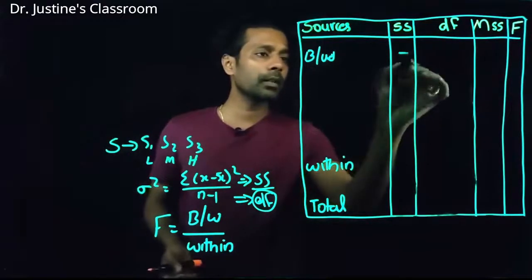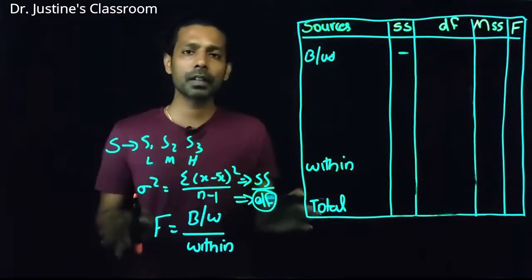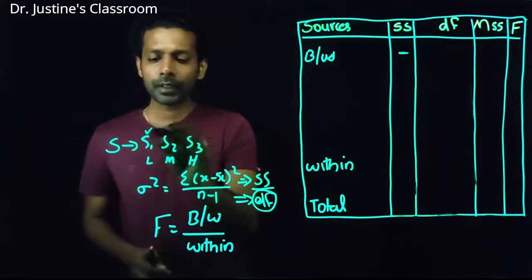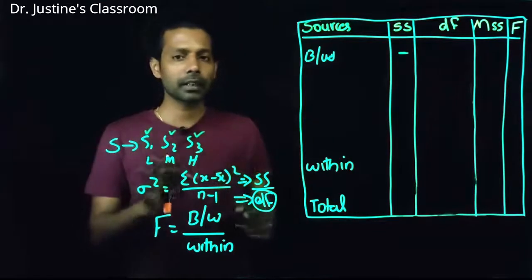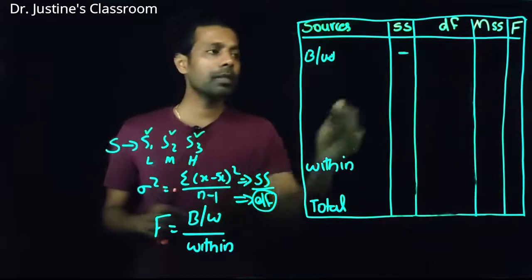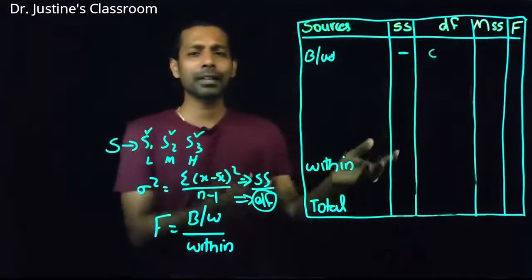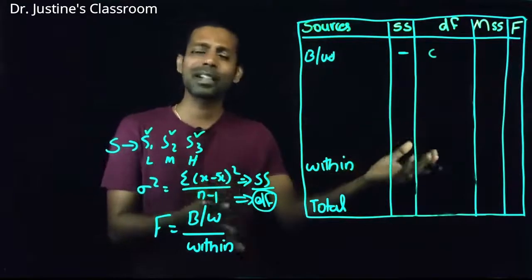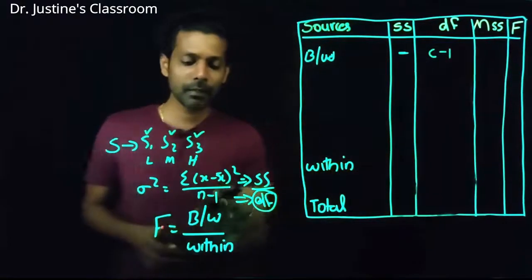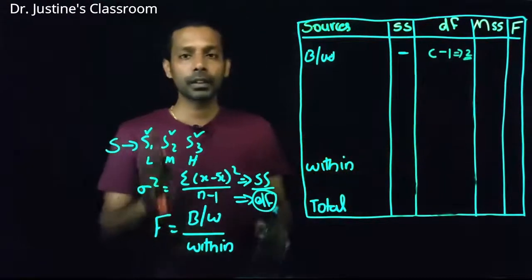Assume you have calculated the sum of squares and need to calculate degree of freedom. Degree of freedom means how many observations we are using to calculate a particular score. I have the mean of S1, mean of S2, and mean of S3 — three values. Using 'C' for number of columns, the between-group degree of freedom is C minus 1, which gives 3 minus 1 = 2.